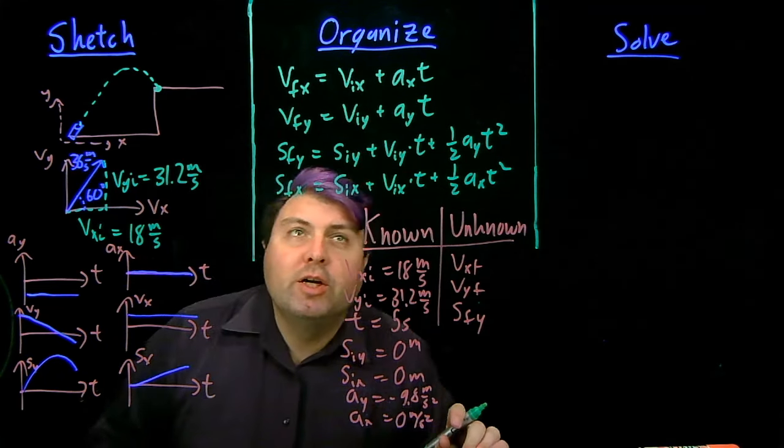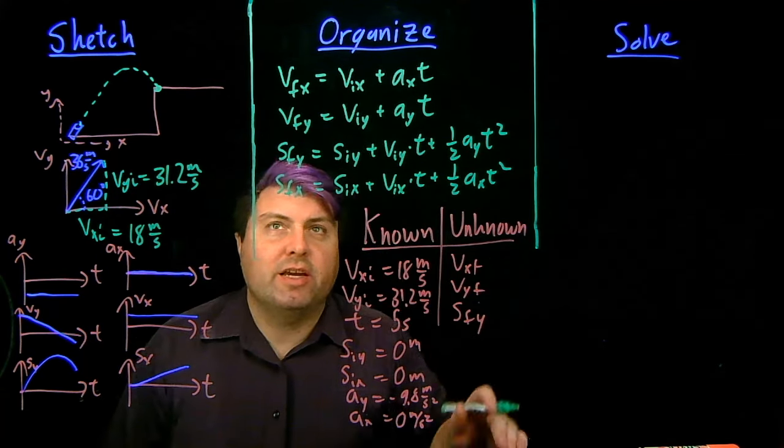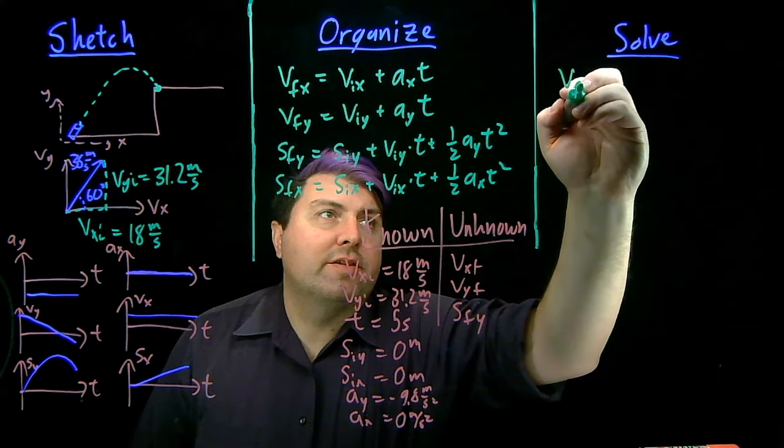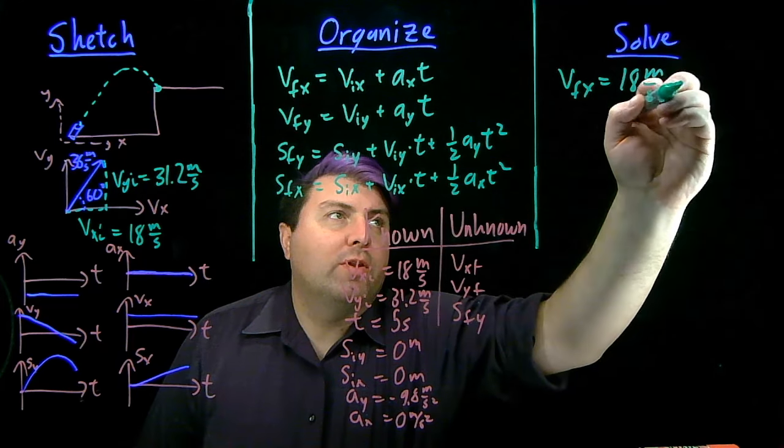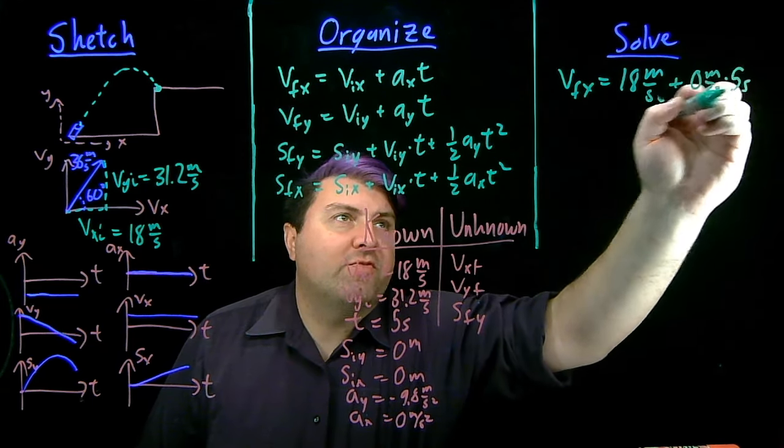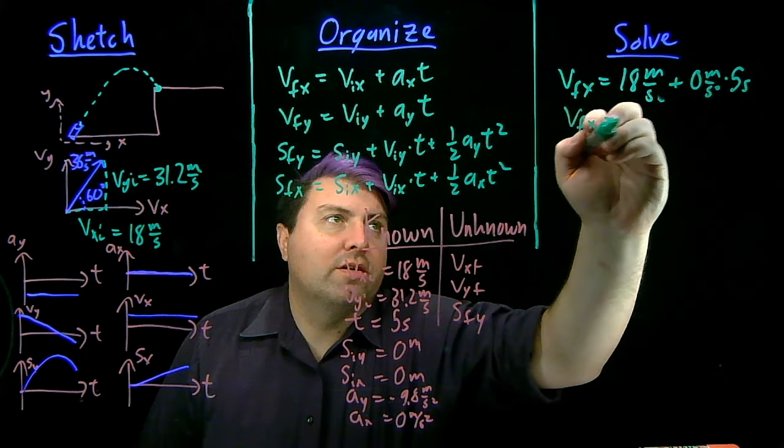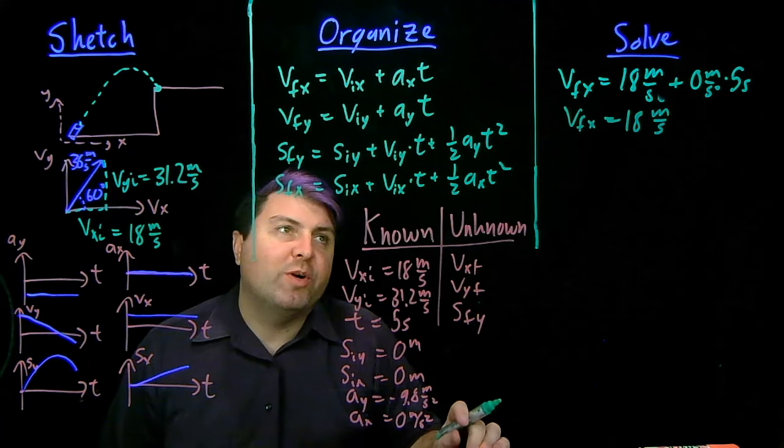We can find the final velocities by using vfx equals vix plus axt. So, vfx is equal to 18 meters per second plus zero meters per second squared times five seconds. So, vfx is 18 meters per second. Not too exciting, but good to get that result.